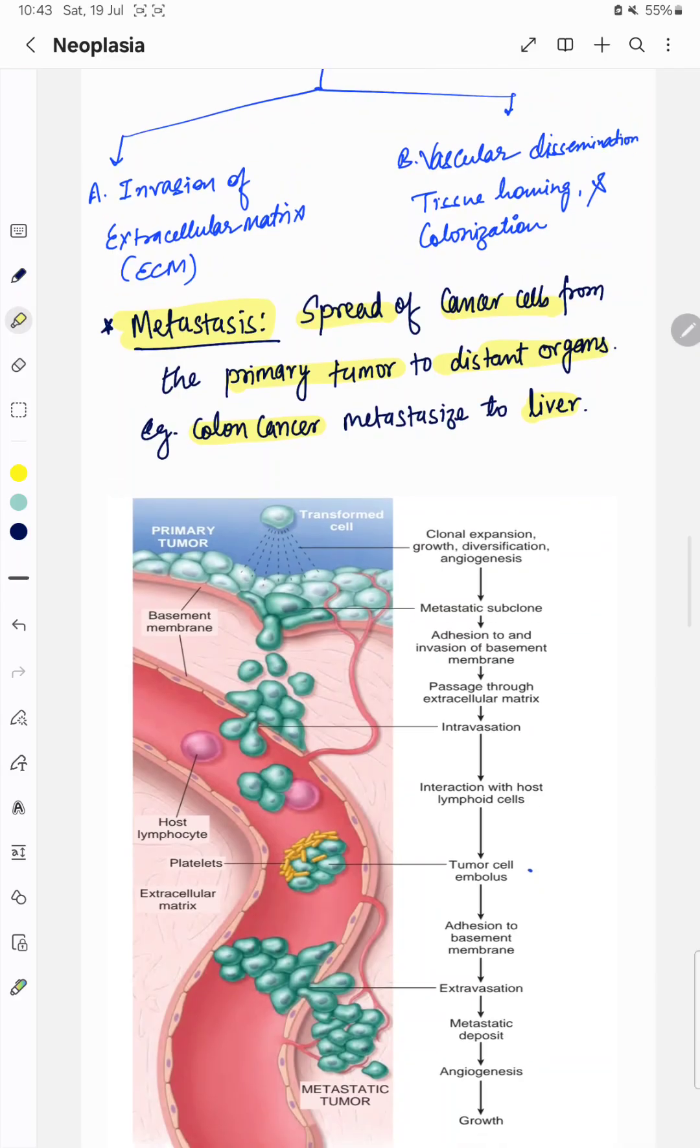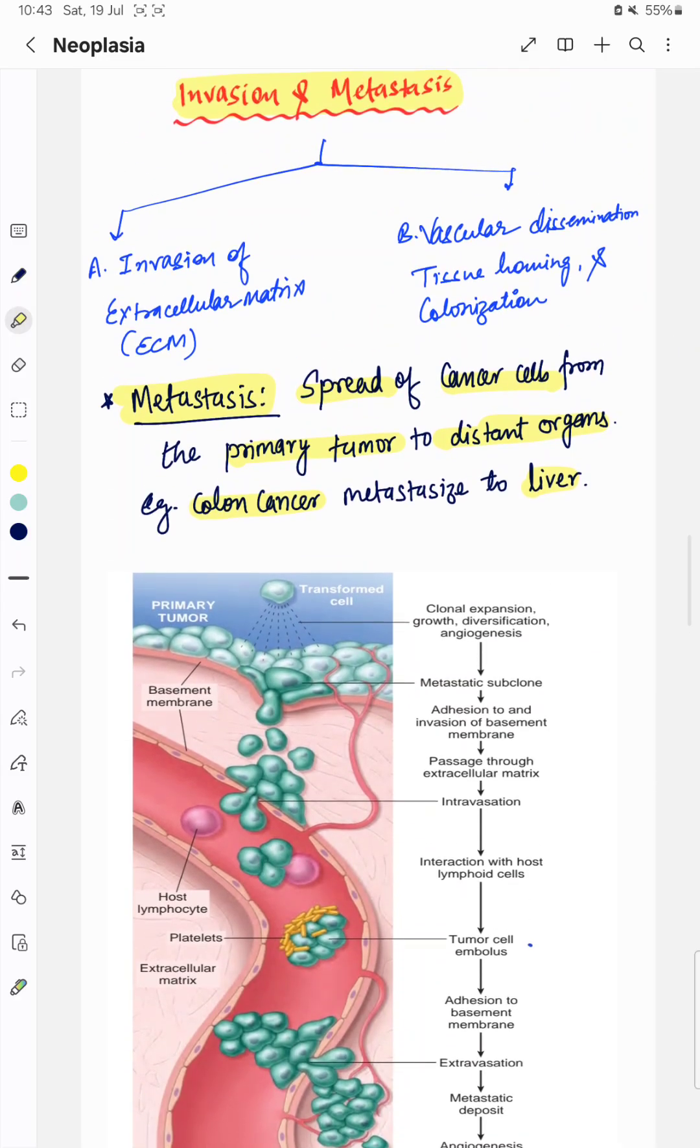This spread or metastasis involves various steps, broadly divided into two steps. Invasion of the surrounding extracellular matrix, and second is vascular dissemination, tissue homing and colonization.